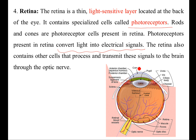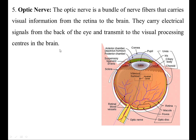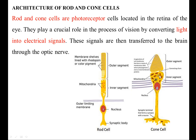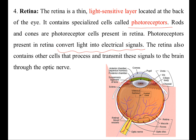The retina also contains other cells that process and transmit signals to the brain through the optic nerve. The optic nerve is a bundle of nerve fibers that carries visual information from the retina to the brain, transmitting electrical signals to the visual processing centers. The major components of the eye are: cornea, pupil, iris, lens, retina, and optic nerve.